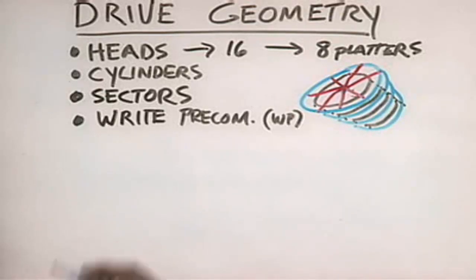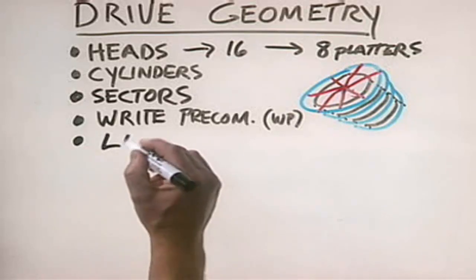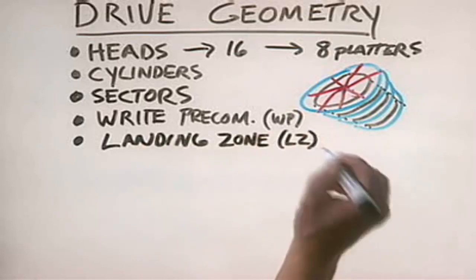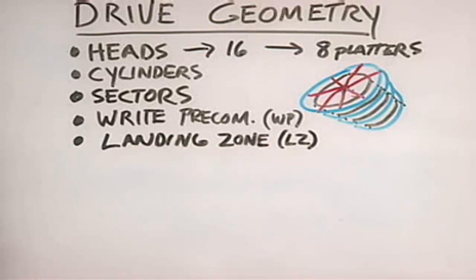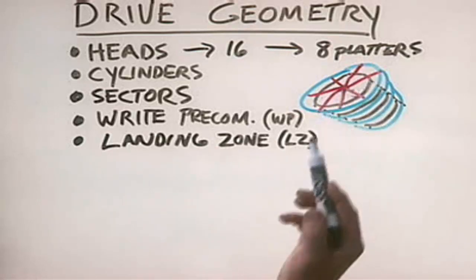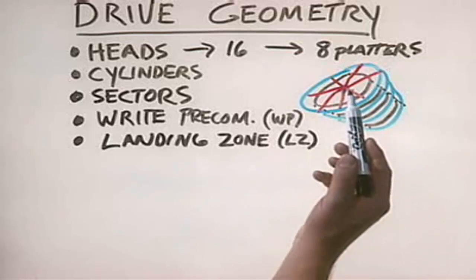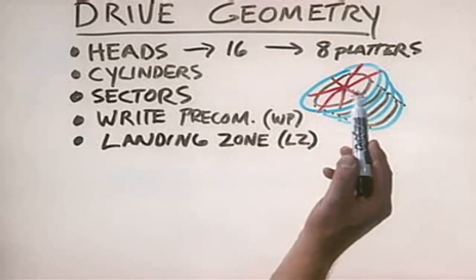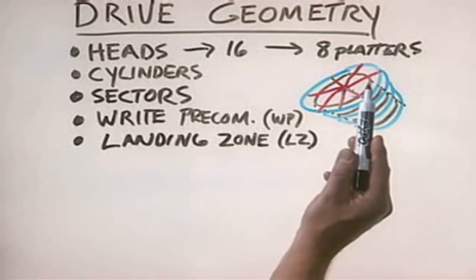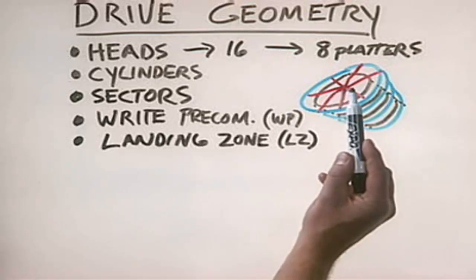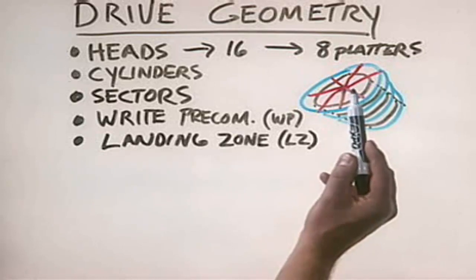The last parameter is called the landing zone, abbreviated LZ — not used at all on newer drives. On older hard disk drives that used a stepper motor, you had to pick a particular spot on the hard drive where, before shutting the system down, you would let the heads rest. You didn't want the head dropping down on an area of the disk where you had data saved. So you designated a specific area — the landing zone — where no data was saved, and that's where the stepper motor would drop the head before shutdown.